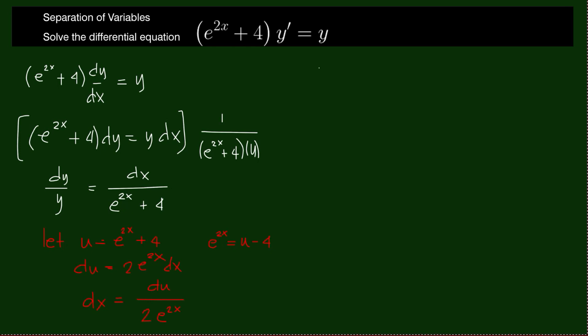So now we have dy over y equals dx, which is du over 2 times e to the 2x divided by this one, which is u.